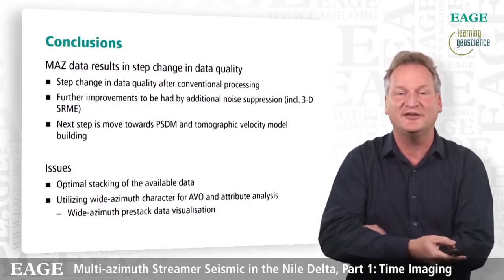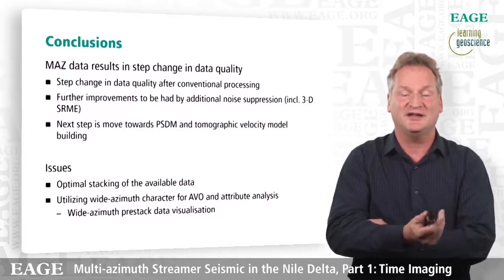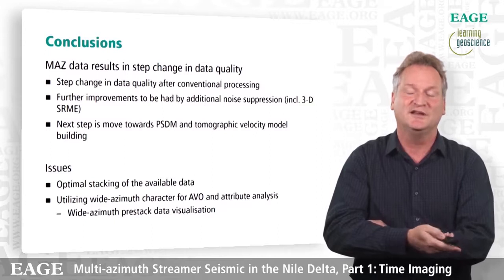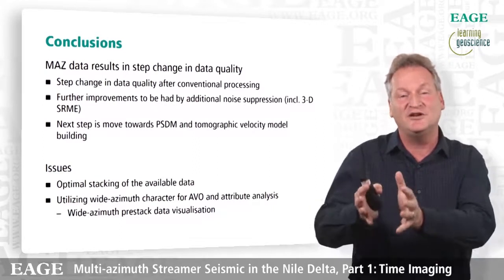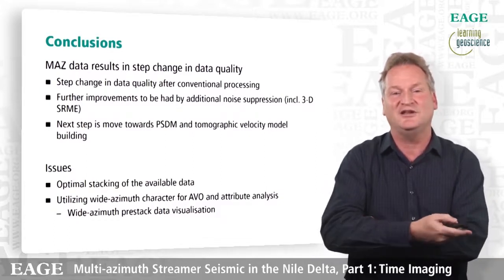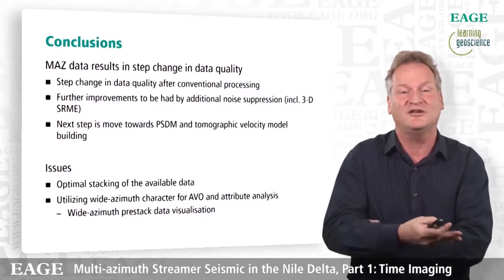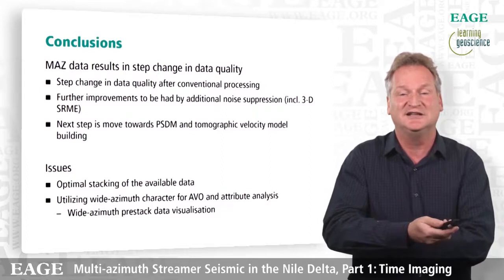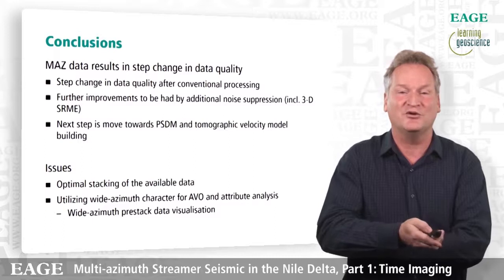In conclusion, we have shown that multi-azimuth seismic results in a step change in data quality, even after conventional processing. There are further improvements to be had by additional noise suppression — for instance inclusion of 3D SRME — and the next step is depth imaging and tomographic velocity model building. One issue worth noting is that when stacking all this data together, you can be smart about it — if one azimuth is extremely noisy in a certain area, it may be preferable not to stack it in at that location. We also haven't looked at AVO and wide-azimuth character of AVO and attribute analysis, which is something to explore when working with this data.